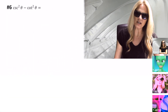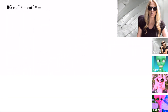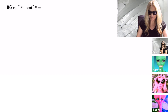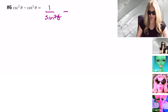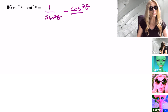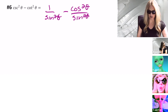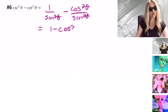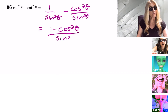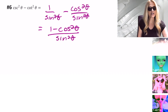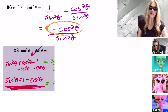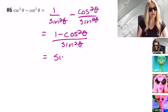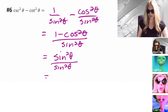Number six: csc²θ − cot²θ. I'll start by rewriting in terms of sine and cosine: 1/sin²θ − cos²θ/sin²θ. They already have a common denominator. Therefore, I have (1 − cos²θ) in the numerator and sin²θ in the denominator. Once again, the Pythagorean identity is disguised: 1 − cos²θ = sin²θ. Substituting, I have sin²θ/sin²θ, which equals 1.